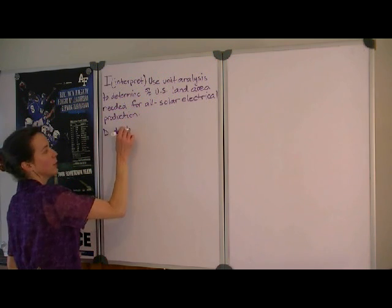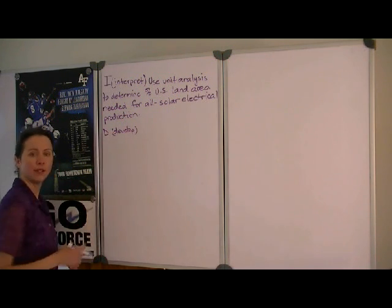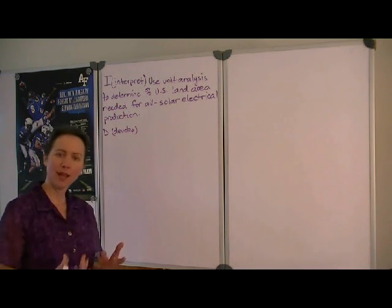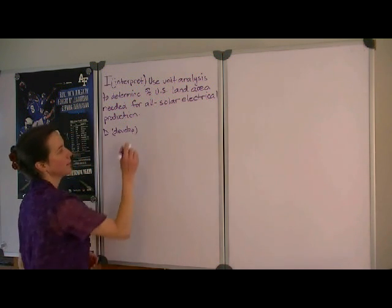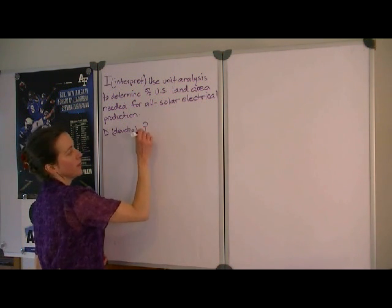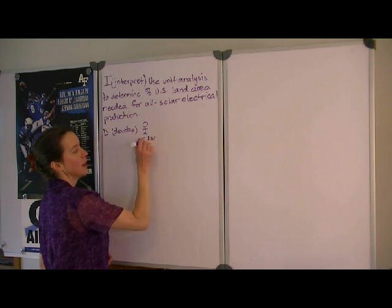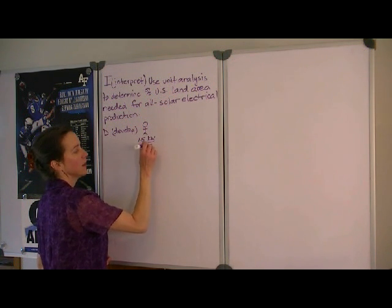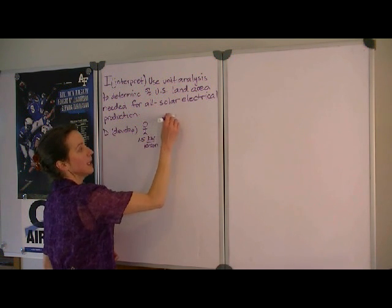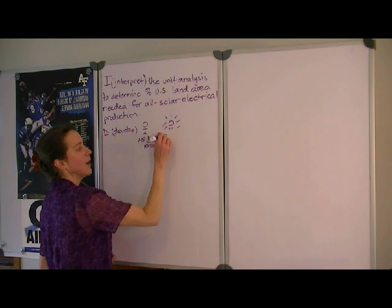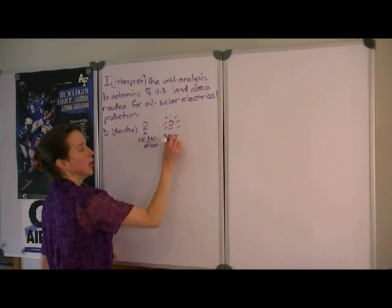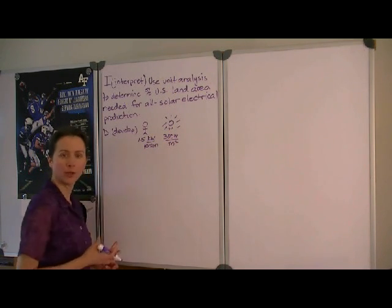As we develop this problem, we will consider what we're given and what we need and we'll make a plan for how to evaluate the problem. So for starters, we're given that each person uses about 1.5 kilowatts of electricity and that the sun delivers about 300 watts per meter squared of the earth's surface area.